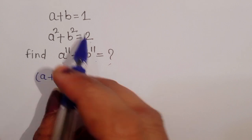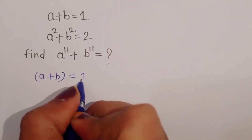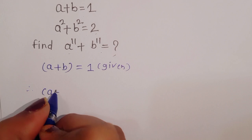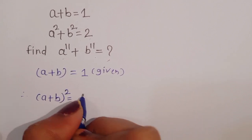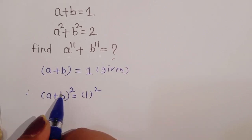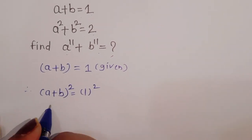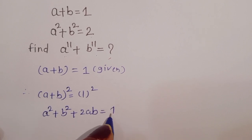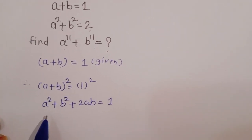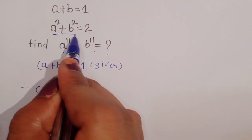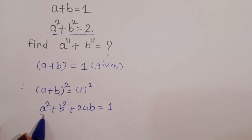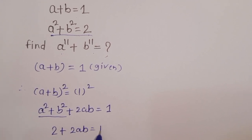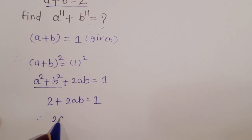First, we see that a plus b is equal to 1 is given. Now we can square both sides: (a+b)² = 1², which gives a squared plus b squared plus 2ab is equal to 1. We know that a squared plus b squared is equal to 2, which is given. So 2 plus 2ab is equal to 1.